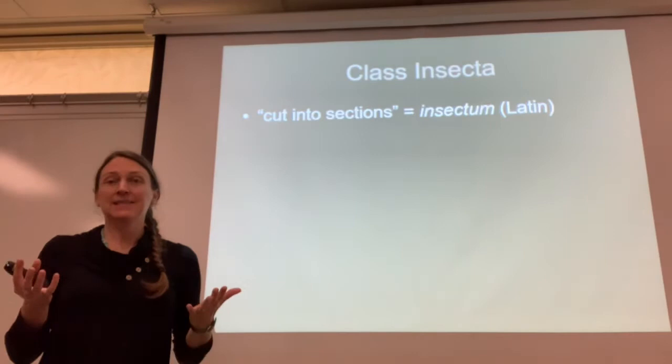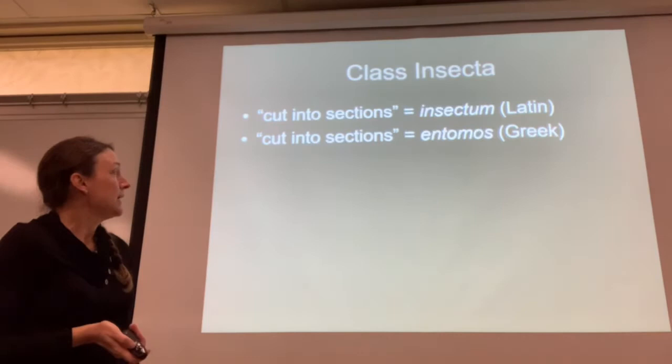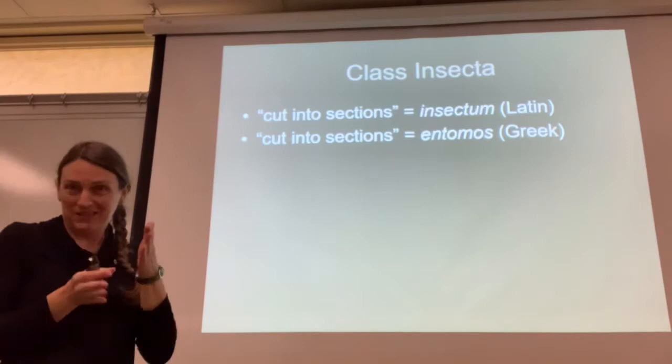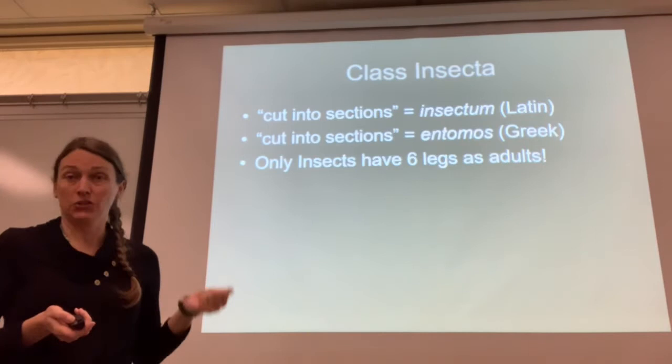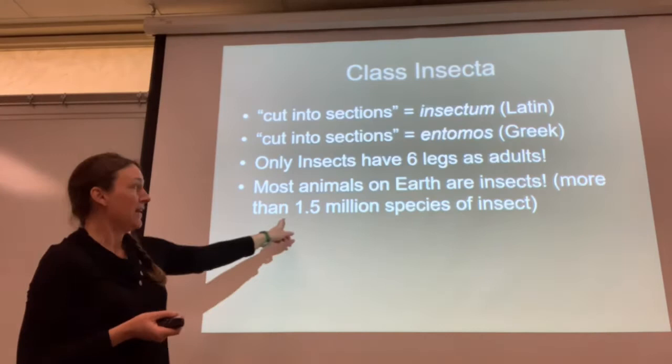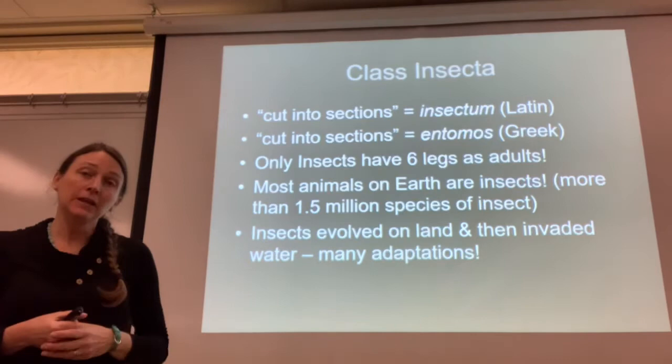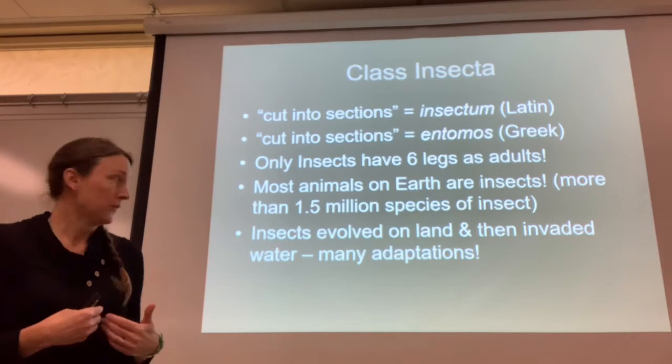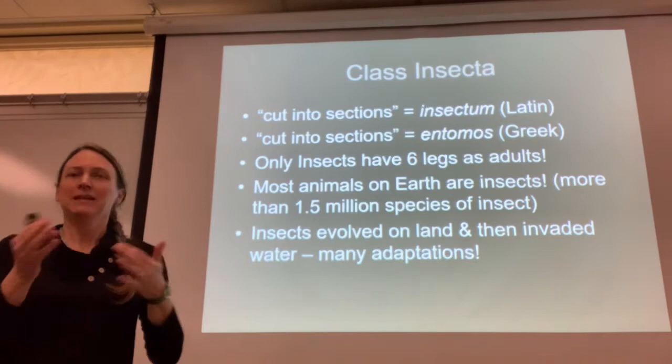The class Insecta means 'cut into sections' — Latin for insectum. It also comes from the Greek root entimos for entomology, which also means cut into sections. Only insects have six legs as adults, and most animals on earth are insects. More than 1.5 million species of insect are known to date. Insects, we think, evolved on land and then re-invaded the water, so there are lots of adaptations to living in water because of this evolutionary history.